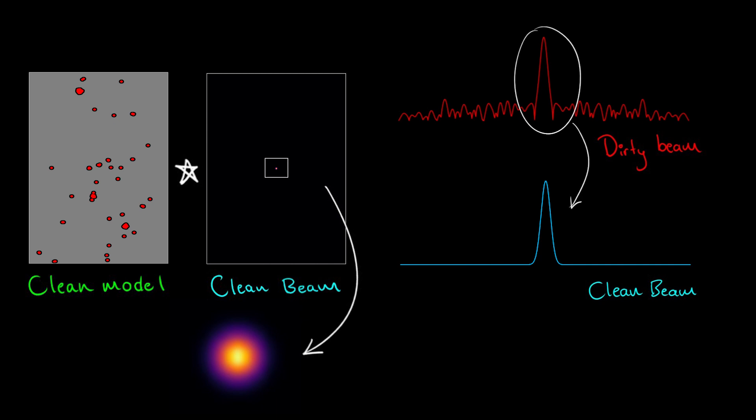Once we're satisfied that our CLEAN image is a good approximation of the true sky brightness distribution, it's time to take the final steps and generate our CLEAN image. First, we convolve this CLEAN components model with a CLEAN beam, typically a Gaussian fit to the central part of the dirty beam, in order to approximate the resolution of the dirty beam and to avoid over-interpreting the CLEAN model image.